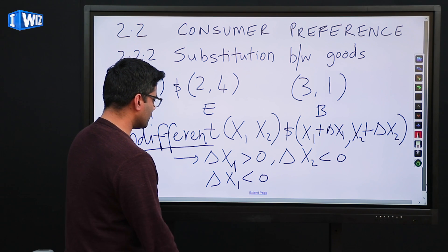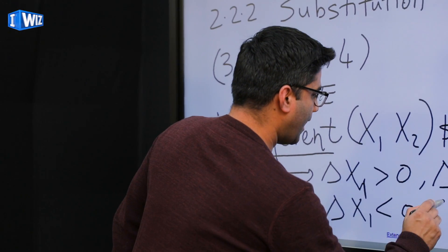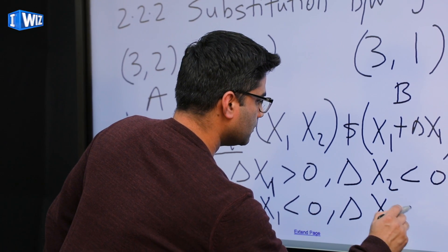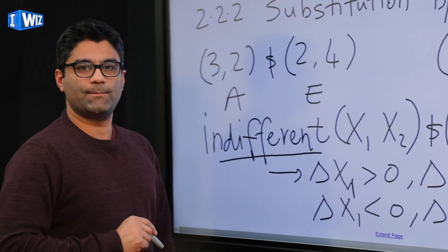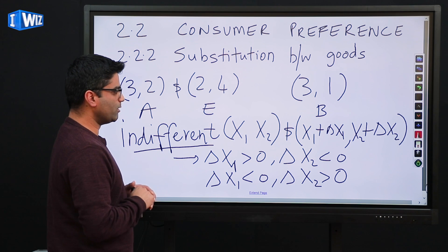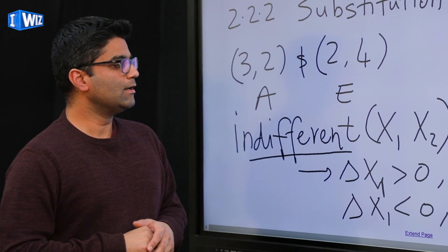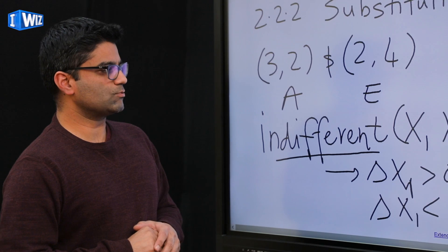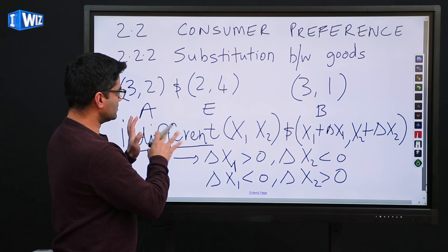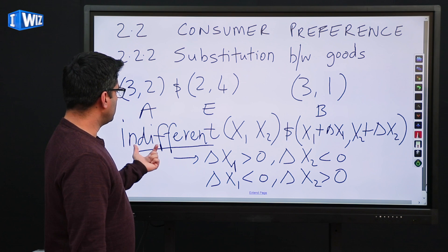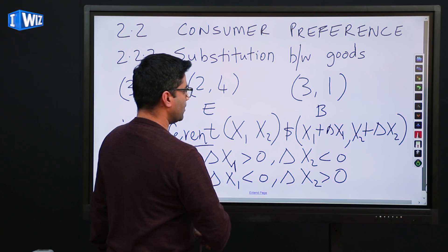Or, to put it differently, if we lose some of x1 then we have to gain some of x2 to be equally happy. So it goes both ways: if you are getting more of x1 you have to lose some of x2, but if you are losing some of x1 then you have to gain some of x2 to leave you equally happy. This is slightly different from monotonic preferences — now we are indifferent between these two bundles.